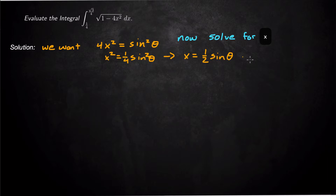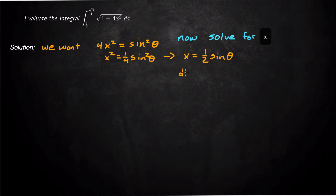If you've solved these before, you don't have to go through all these steps, but it helps when you do completing the square with more complicated radicals. The substitution we need is x = ½sinθ, so dx = ½cosθ dθ.